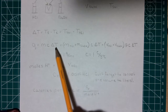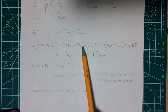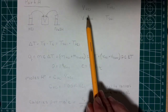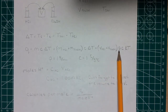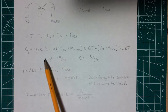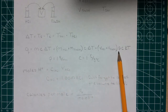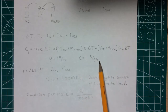Q is equal to the total mass of the system times the specific heat capacity times delta T. The mass here is the mass of the HCl plus the mass of the sodium hydroxide, but since we're only given their volumes, we add those two volumes together and multiply by the density — represented by the Greek letter rho. We'll assume the density is the same as water: 1 gram per milliliter. We also use the specific heat capacity of water: 1 calorie per gram per degree Celsius.